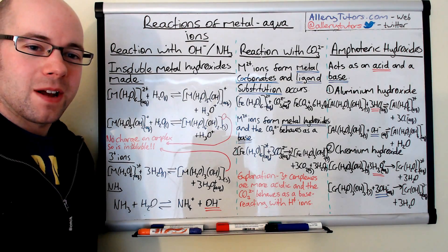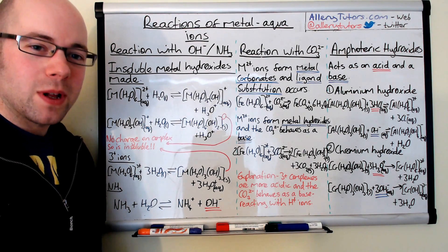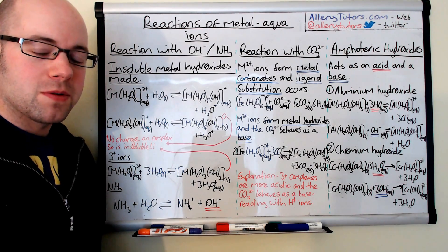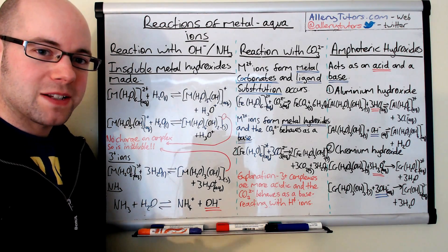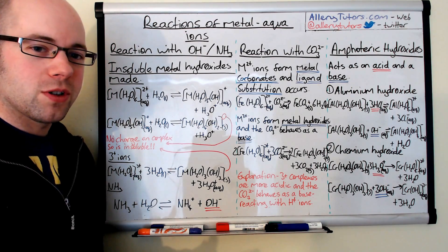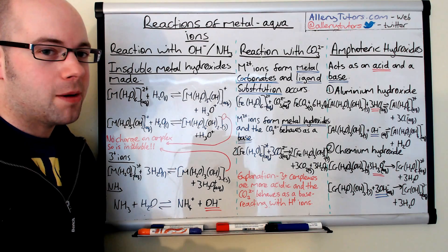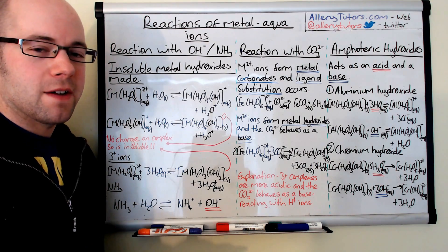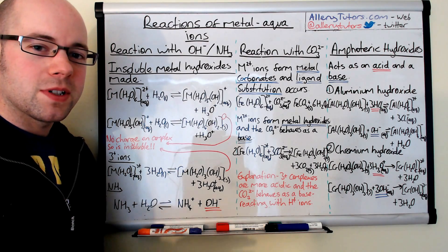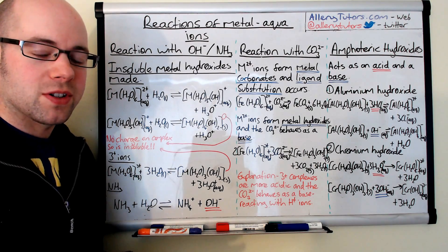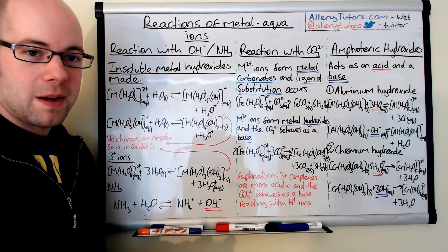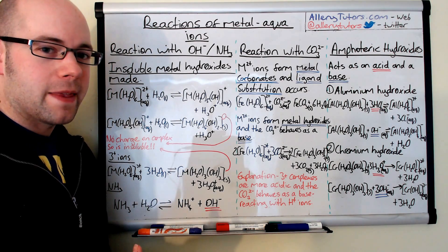Hi there, my name is Chris Harris and I'm from AlloyTutors.com. Welcome to this video on reactions of metal aqua ions. In this video we're going to look at transition metal complexes and their reactions with hydroxide and ammonia. We're also going to look at reactions with carbonates, and finally two examples of amphoteric hydroxides. We'll start with the reactions with hydroxides and ammonia, looking at a few examples and explaining why they occur.